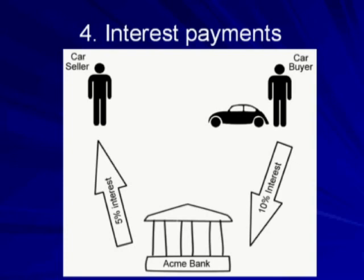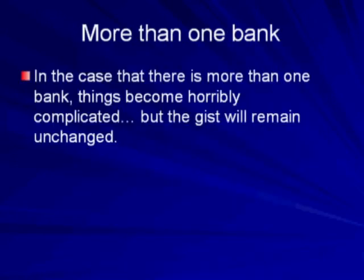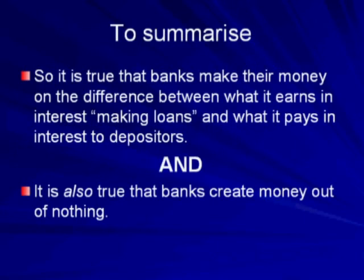In the case that there is more than one bank, things become rather complicated for a short video like this to explain. But the principle remains the same. So it's true that banks make money on the difference between what they earn in interest making loans and what they pay in interest to depositors. And it is also true that banks create money out of nothing. There is no contradiction.